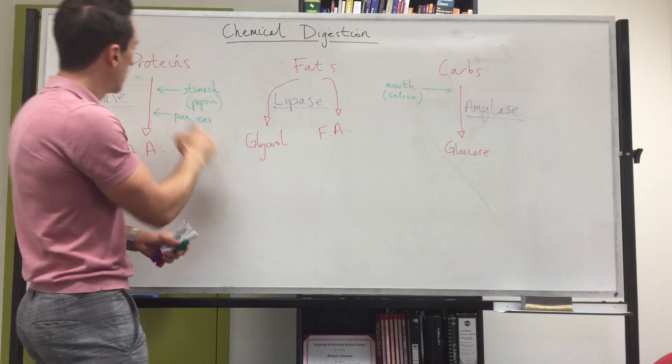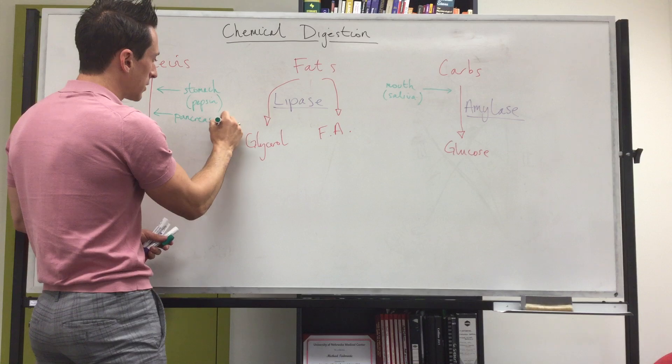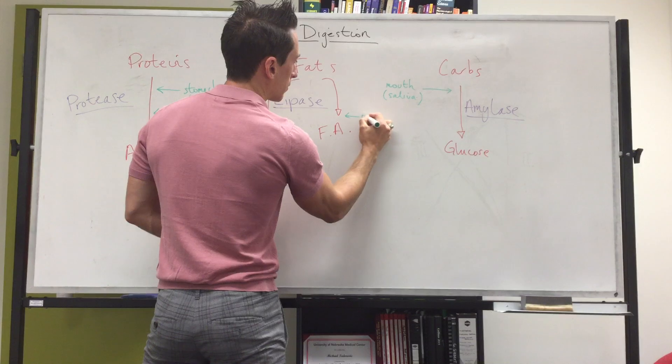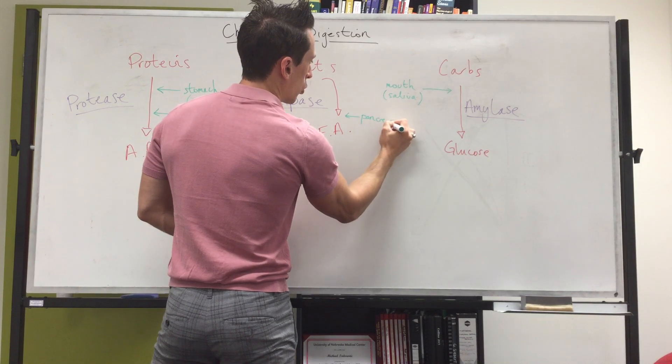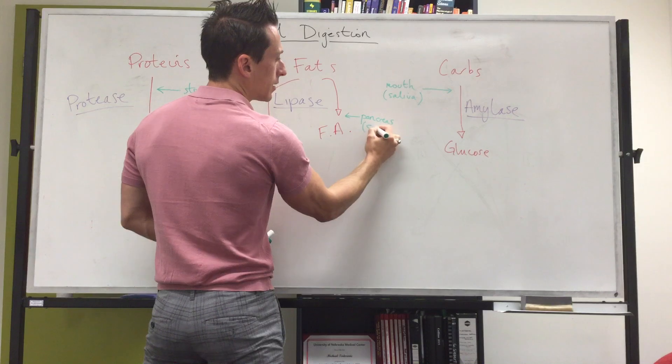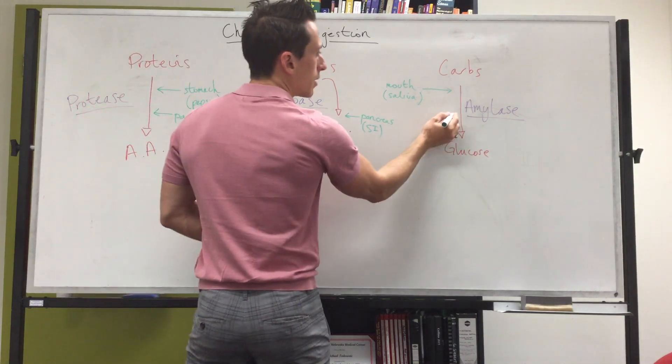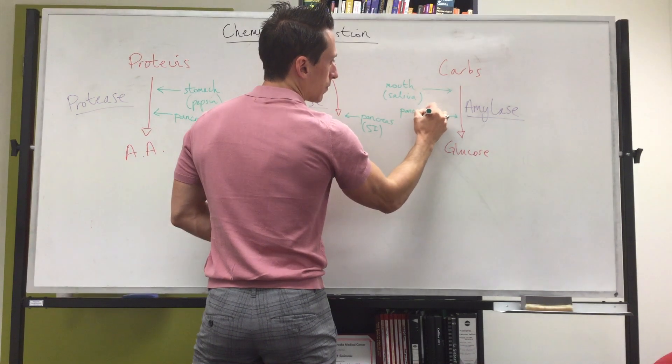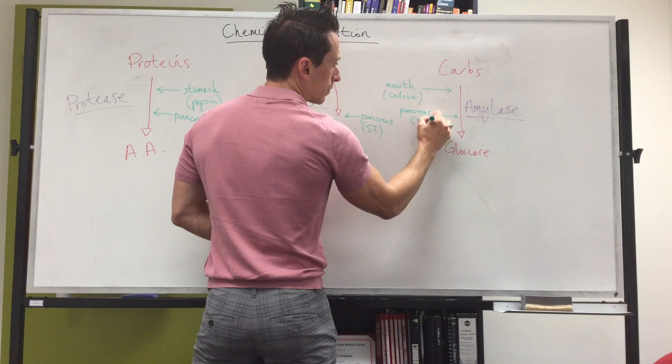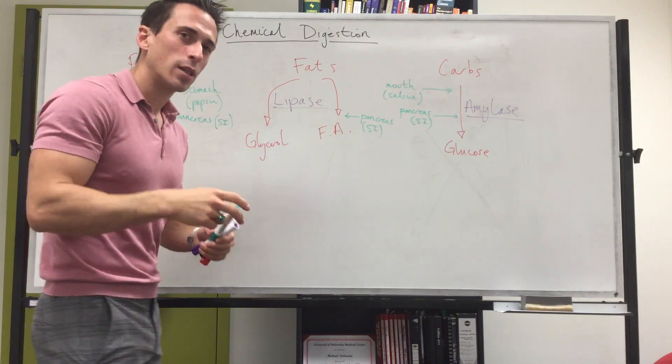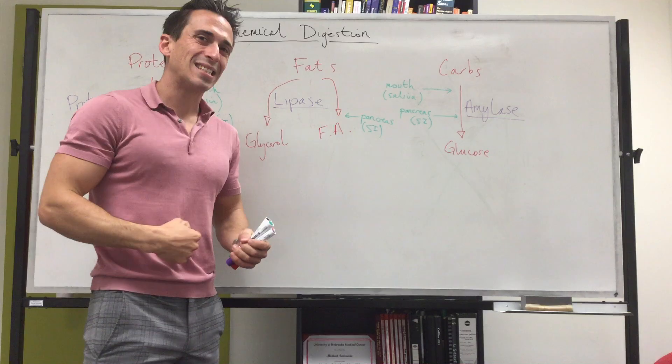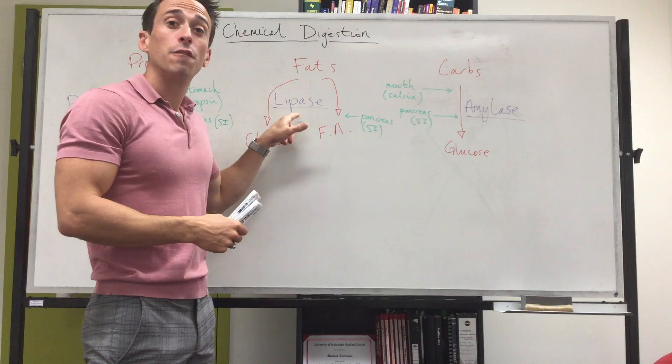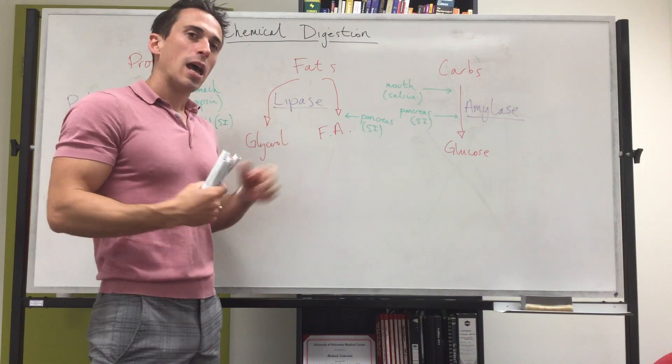So what we can do is we can move through and we can say that the pancreas, even though it's not the site of digestion, will release proteases into the small intestines, the pancreas will release lipases into the small intestines, and the pancreas will release amylase into the small intestines. This is important because it tells you that by the time we get to the small intestines, nearly everything is chemically digested except fats.